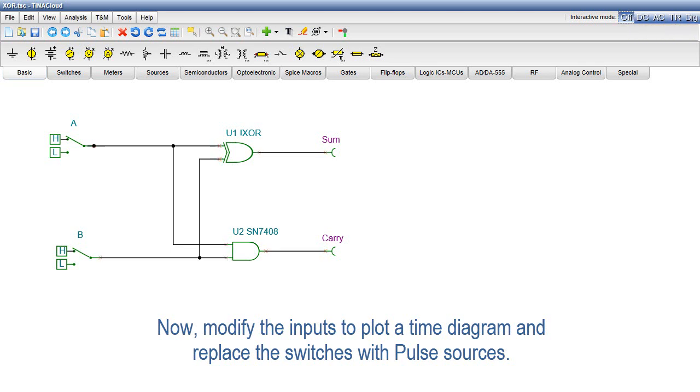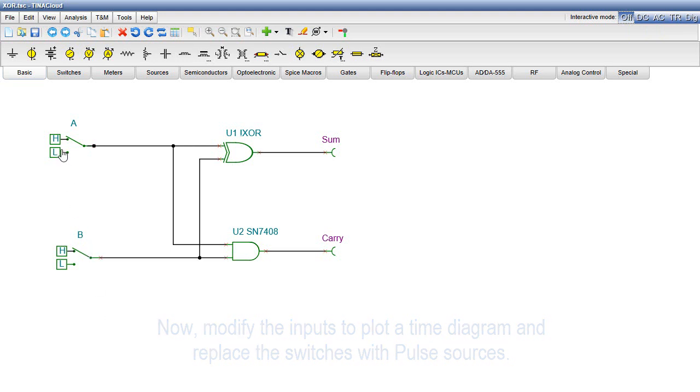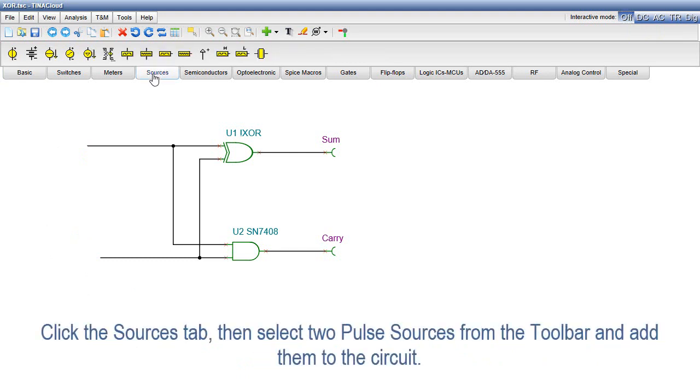Now, modify the inputs to plot a time diagram and replace the switches with pulse sources. Delete the two switches, click the Sources tab, then select two pulse sources from the toolbar and add them to the circuit.